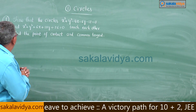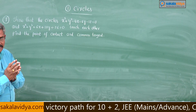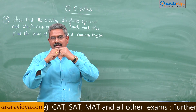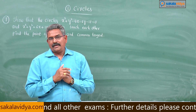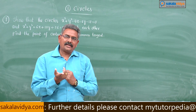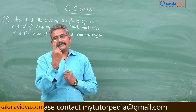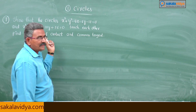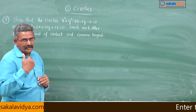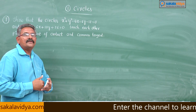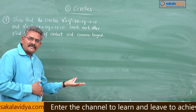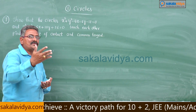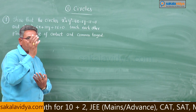Let us come to this problem. We have to show that these two circles touch each other. There will be two ways — they touch externally or they touch internally. Even though they touch internally or externally, we get only one equation of the tangent. After putting these two equations in standard form, if you subtract one equation from the other and equate to zero, we get the equation of the common tangent. If the first equation is S = 0 and the second is S' = 0, then the equation of the common tangent is S - S' = 0. This is very simple.